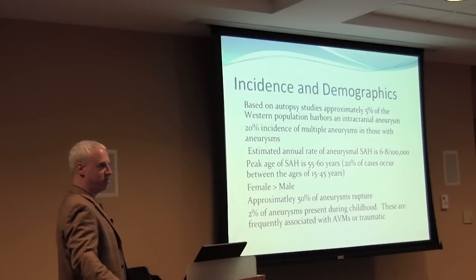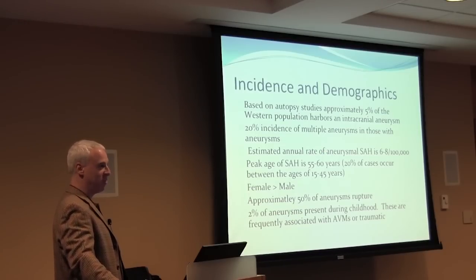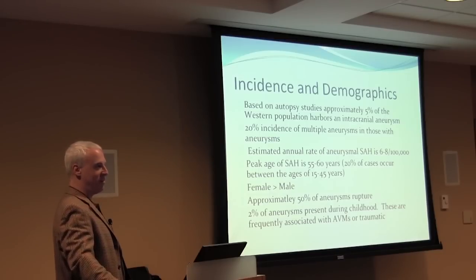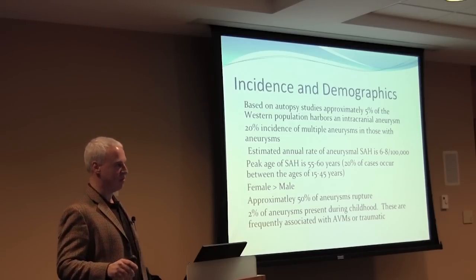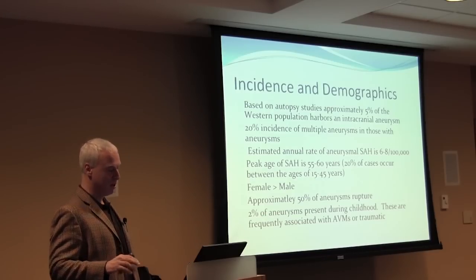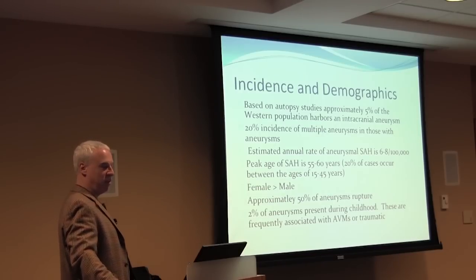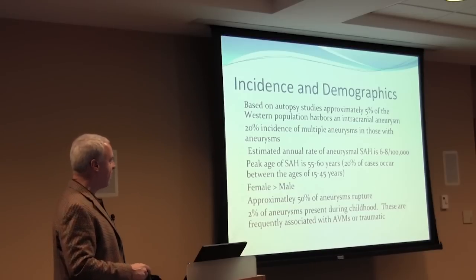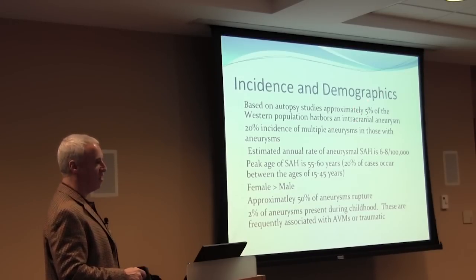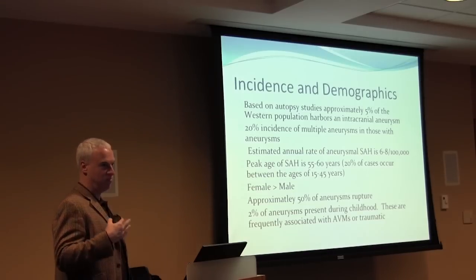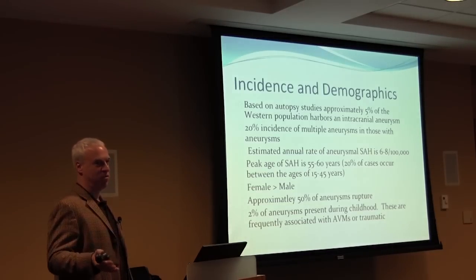Not all aneurysms are symptomatic — many people go through their whole life with an aneurysm and never have a symptom. Twenty percent of people who have one aneurysm have another aneurysm. The rate of aneurysmal subarachnoid hemorrhage is six to eight per hundred thousand per year. While five percent of the population has an aneurysm, only six to eight out of a hundred thousand will actually rupture per year, so you're more likely than not not to rupture if you have an aneurysm.